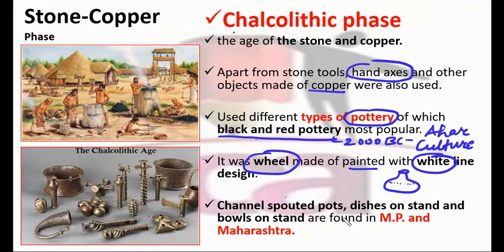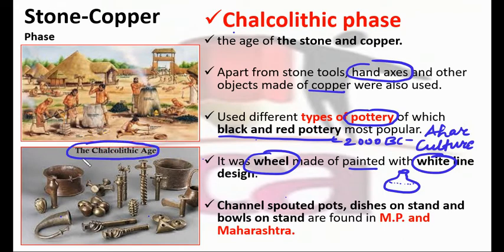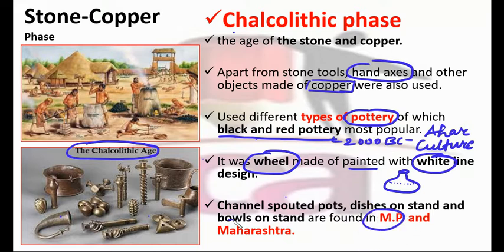Channel spouted pots, dishes on stands, and bowls on stands are found in Madhya Pradesh. Here I have shown some Chalcolithic age tools and pottery, especially those made up of copper. Examples are also found in Maharashtra.